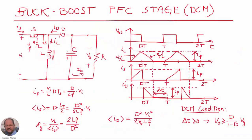Now we are going to see a more detailed analysis of our converter. Here we have the schematic of the buck-boost converter. Is represents the current through the switch, id is the current through the diode, and iL is the current through the inductor. We have here the waveforms for these elements: the current through the inductor, through the switch, and through the diode. This is the common analysis of a boost converter operating in discontinuous conduction mode.